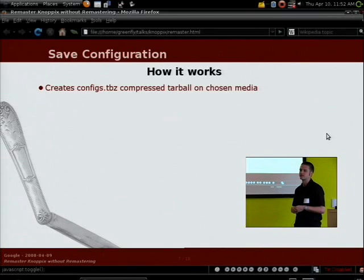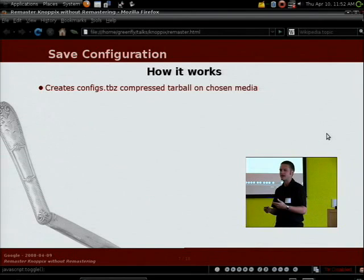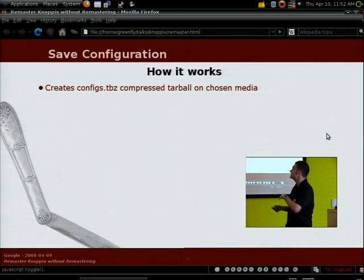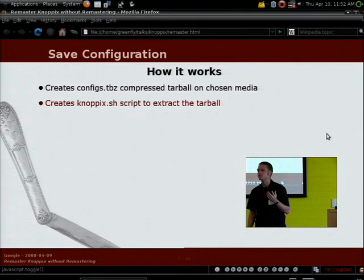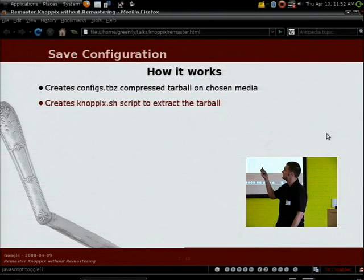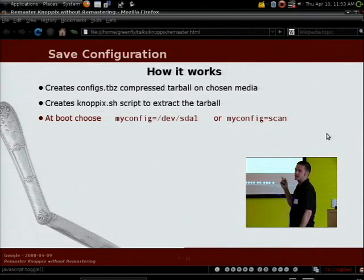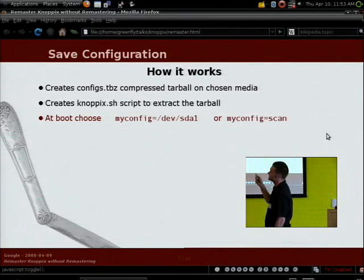Basically how it works is it creates a file called configs.tbz — a compressed bzip2 tarball — on your chosen media. When you run the script it detects any potential storage media: USB keys, hard drive partitions, etc. You choose which one to use and it creates the file on that media. It also creates a file called knoppix.sh, which is essentially a shell script that untars that tarball. At boot, you can use a cheat code at the boot prompt: 'myconfig=sda1' (or whatever your USB drive's device is), or 'myconfig=scan' and Knoppix will scan all available media for the script and run it if found.